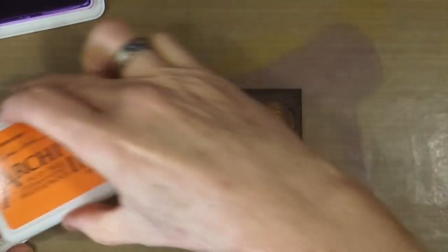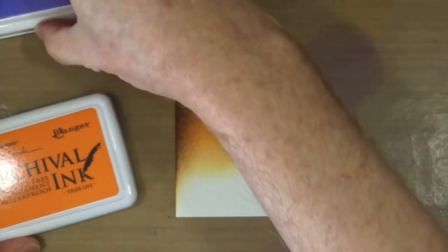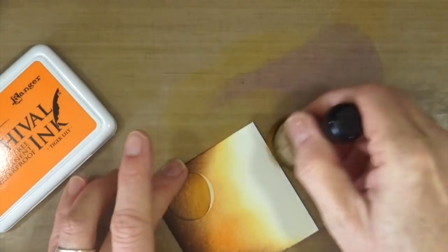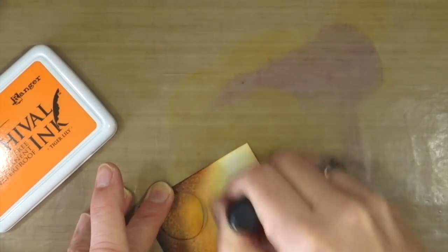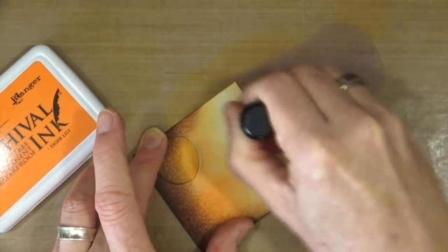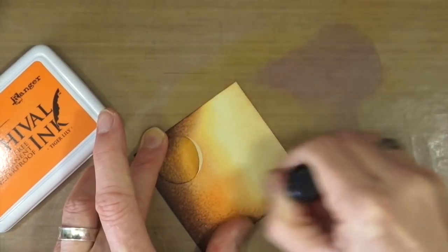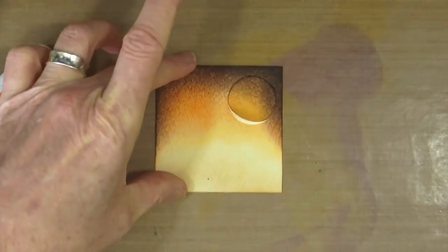I think that's enough of the deep purple, so I'm just going to bring the Tiger Lily back in again. I'm going to fill in that area at the bottom and then blend out some of the stronger lines with the purple. That's looking good, so I'm now just going to have a quick tidy up, get rid of that ink on my craft mat, and then I'm ready to apply my next color.